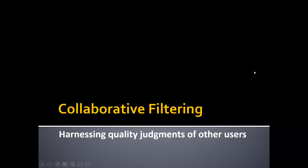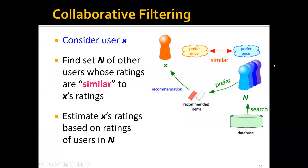Next, let's talk about the second approach, which is collaborative filtering. Essentially, collaborative filtering tries to harness the quality judgments of other users to make recommendations. The idea is quite simple. If we want to make recommendations to user A, we'll first find a set of other users whose ratings are similar to A's ratings — users that have similar likes and dislikes — and then estimate A's ratings based on the ratings of users in that neighborhood set.